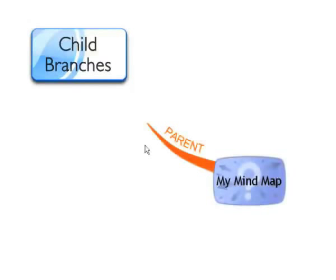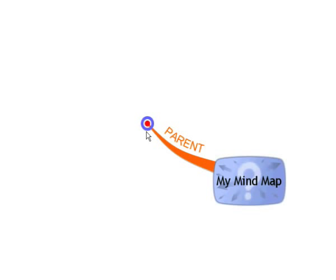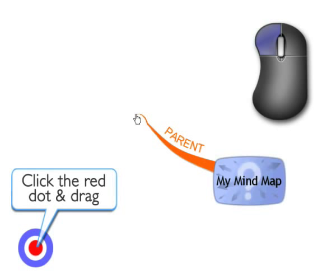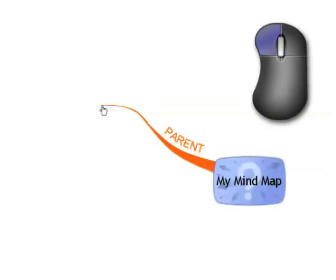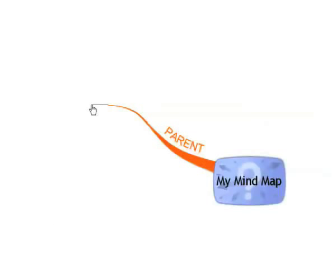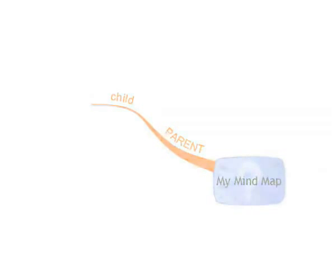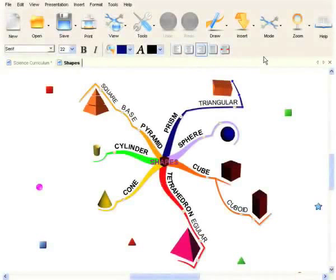To insert child branches, place your cursor over the end of the parent branch. When you see the blue and red target, click on the red dot in the center and drag outwards. You will see a new branch emerge. Release the mouse button when the branch is the desired length.